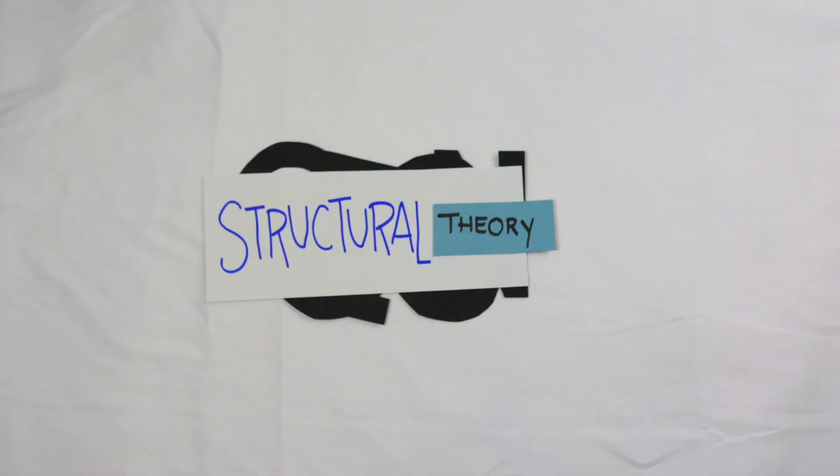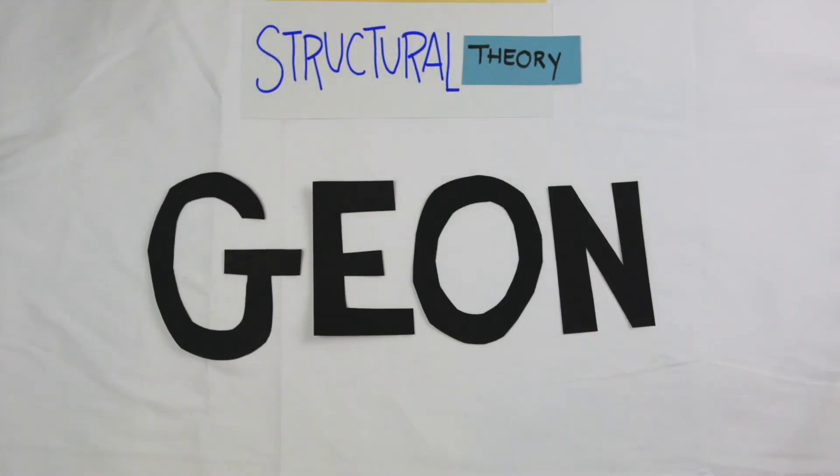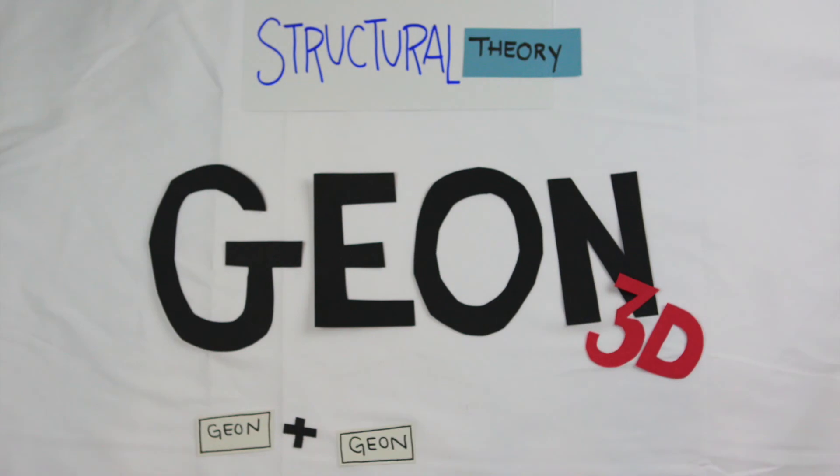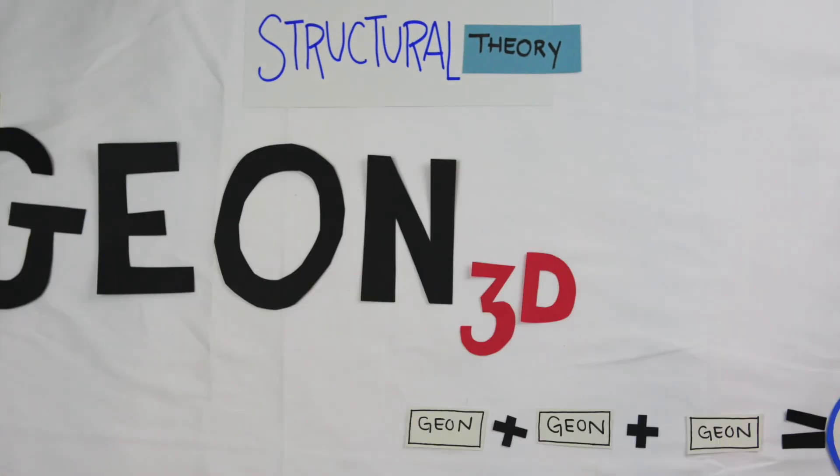Structural theory takes pattern recognition a step further and looks at elements called geons. Geons are three-dimensional simplistic objects that are combined to create a perceptual object. Different combinations lead to different objects.